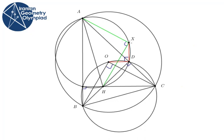Point X is the circumcenter of triangle AHC. So XC is equal to XA.